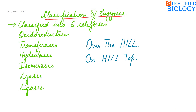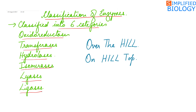Enzymes can be classified into six categories: Oxidoreductases, Transferases, Hydrolases, Isomerases, Lyases, and Ligases. To remember them, the mnemonic is 'Over The Hill' or 'On Hilltop'.